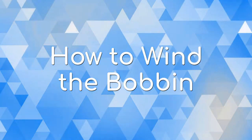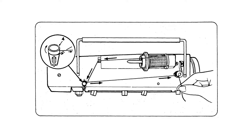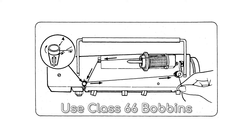Let's start by winding a bobbin. This is the handy dandy threading diagram from the manual that we'll be following.